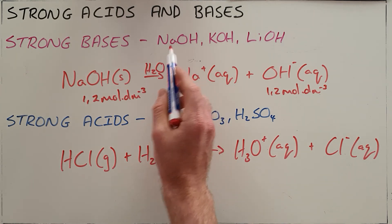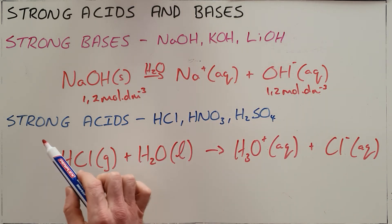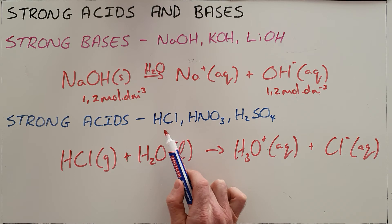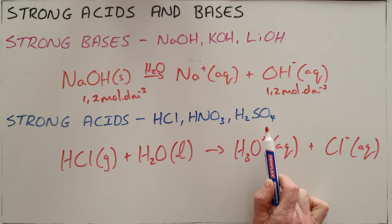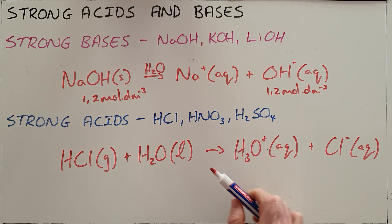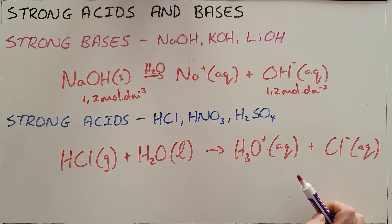These are the common strong bases: sodium hydroxide, potassium hydroxide and lithium hydroxide. The common strong acids are hydrochloric acid, nitric acid and sulphuric acid. Most other acids and bases are considered either weak or medium and it is typically these that are considered the strong acids and bases.